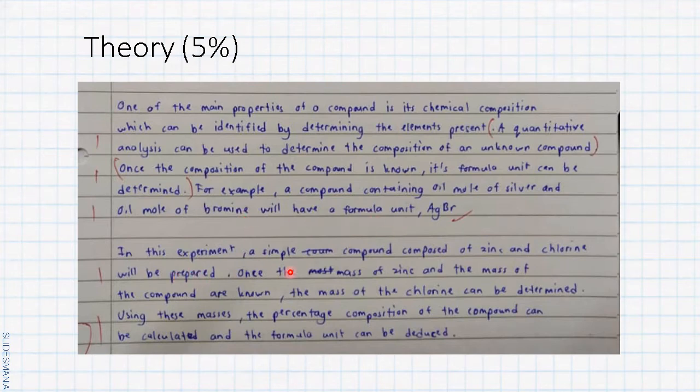Next, in this experiment a simple compound composed of zinc and chlorine will be prepared. Mention the objective of this experiment. Once the mass of zinc and the mass of the compound are known, the mass of chlorine can be determined. Using this mass, the percentage composition of the compound can be calculated and the formula unit can be determined. So you write down 5 points for the theory part, so you get five marks.